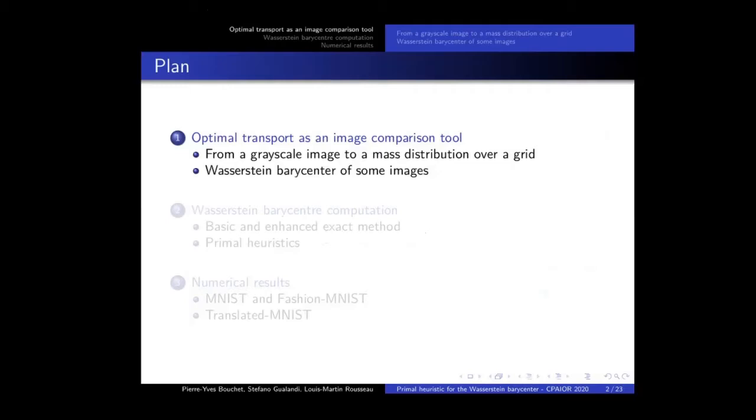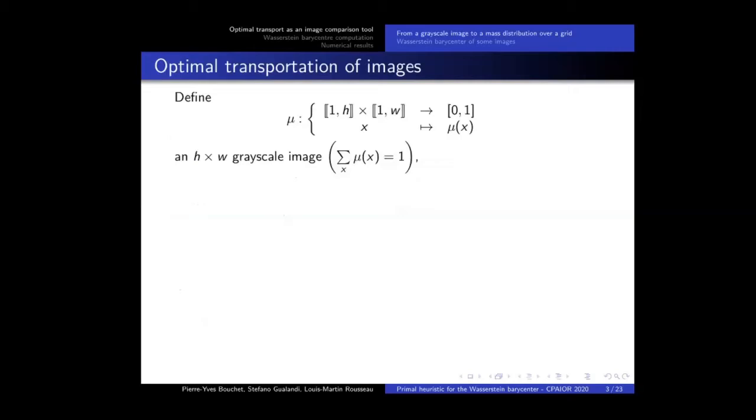That being said, here we go. First of all, I will explain how do we see an image in optimal transport. Assume that we use grayscale images with dimension h times w. It will be seen as a grid, where each pixel becomes a location. And on each location, each point of the grid, we will have the pixel intensity, its luminosity, seen as a real in 0,1. It is in 0,1 because we normalize over all the images. In addition to that, we will define a transportation cost from a location to another. Here, it is only the traditional Euclidean cost.